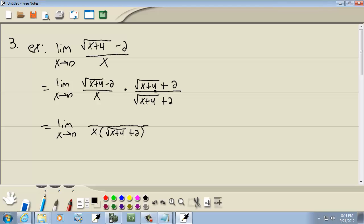Square root of x plus 4 times square root of x plus 4 is x plus 4. Minus 2 times 2 gives you 4. Well, 4 minus 4 drops away and we've got x over x times square root of x plus 4 plus 2.